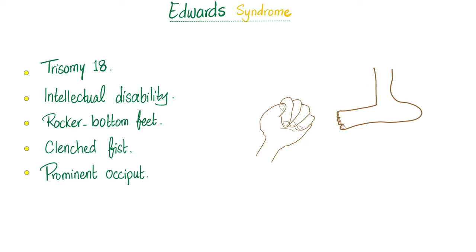Next, Edwards syndrome — this is trisomy 18. Down syndrome is way more common. There is also intellectual disability, but then we have rocker bottom feet, clenched fist with overlapping fingers, prominent occiput, Meckel's diverticulum, and others.